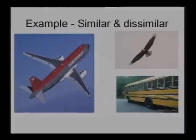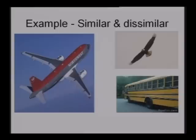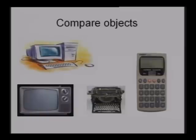For example, when you want to define the term aeroplane, you need to consider at least a bird and a vehicle, isn't it? Likewise, to define a man, you need to consider a monkey and a buffalo, isn't it? Similarly, you can define a computer with similar and dissimilar objects.